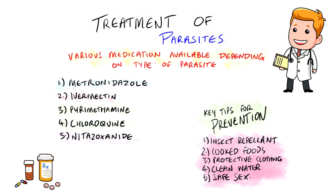Some key tips for prevention of parasite infections include using insect repellent, ensuring that you are only eating cooked foods whereby any meats are cooked thoroughly, wearing protective clothing, drinking clean water, using mosquito spray, drinking only clean water from sealed bottles if you are traveling abroad, and practicing safe sex.